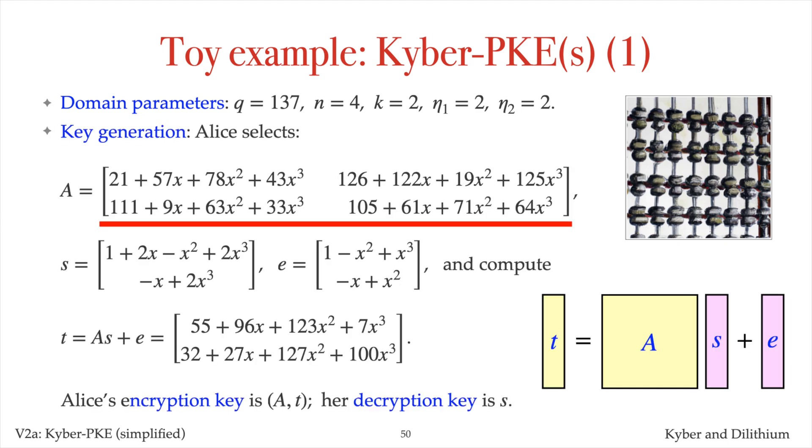Alice selects this 2 by 2 matrix of polynomials. Each polynomial has a degree at most 3, with coefficients in the integers modulo 137. Alice selects this vector S of small polynomials, and this vector E of small polynomials. She then computes T as A times S plus E. Alice's encryption key is AT. Her decryption key is S.